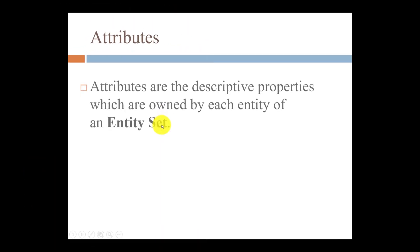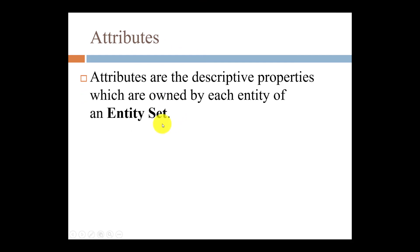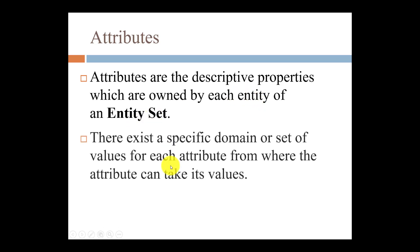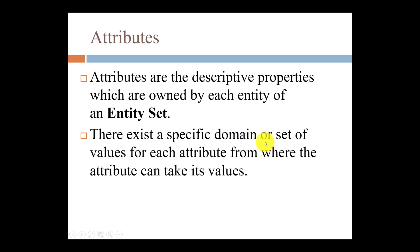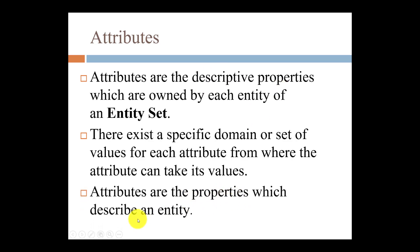Now what is an attribute? Let's first understand the formal definition. Attributes are nothing but descriptive properties — properties which describe something owned by each entity of an entity set. That is, we are going to describe the properties or characteristics of each entity held in an entity set. There exists some specific domain or set of values that each attribute can take, representing data values. That's why attributes are called descriptive properties or descriptive characteristics.